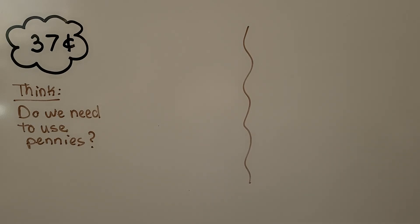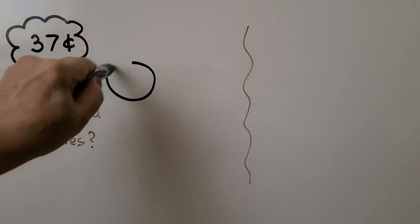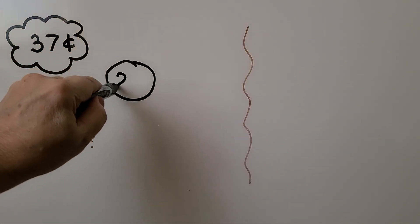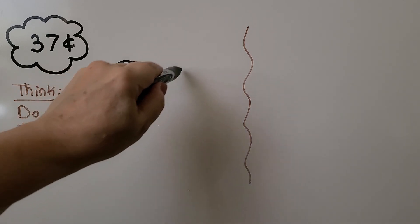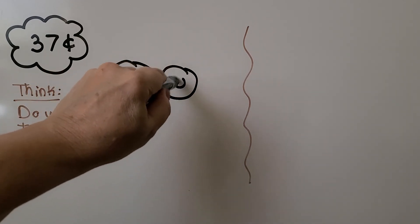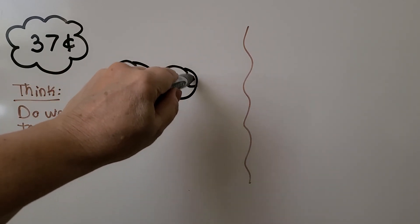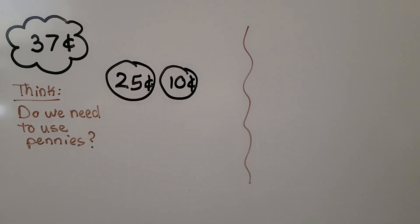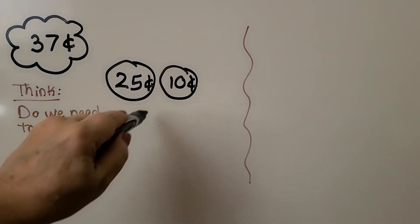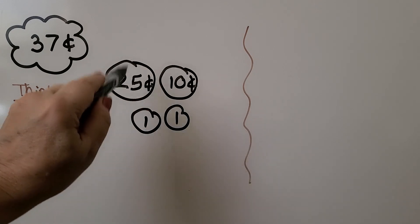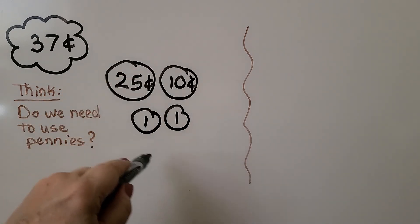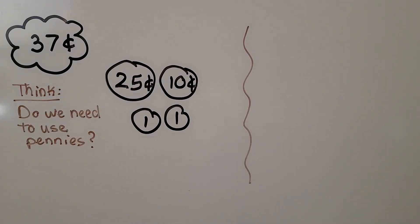We can draw a quarter — that's 25 cents — and a dime — that's 10 cents. Now we're at 35 cents. We can draw two pennies: 25, 35, 36, 37. We would have four coins totaling 37 cents.